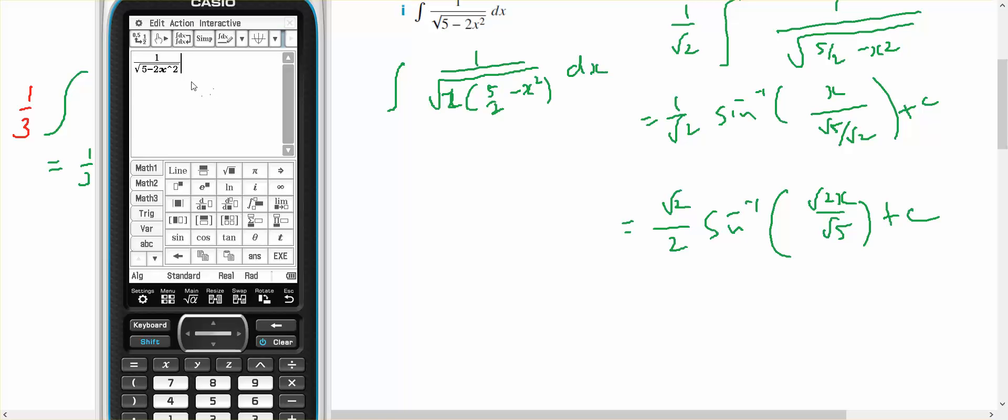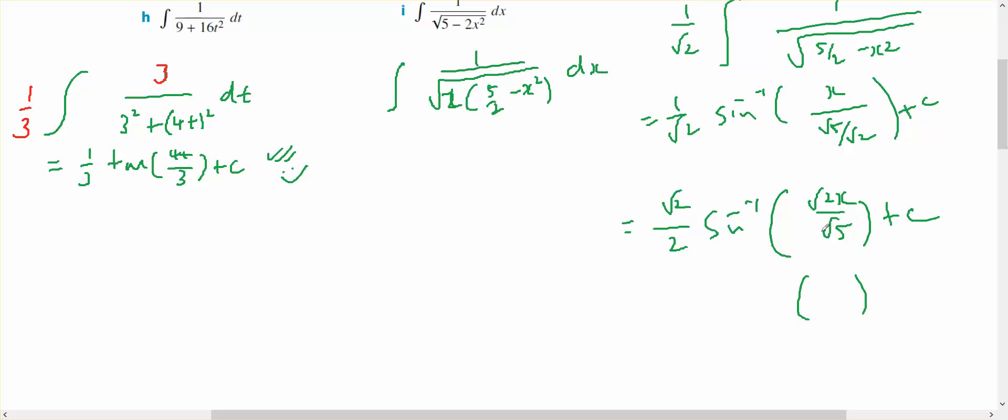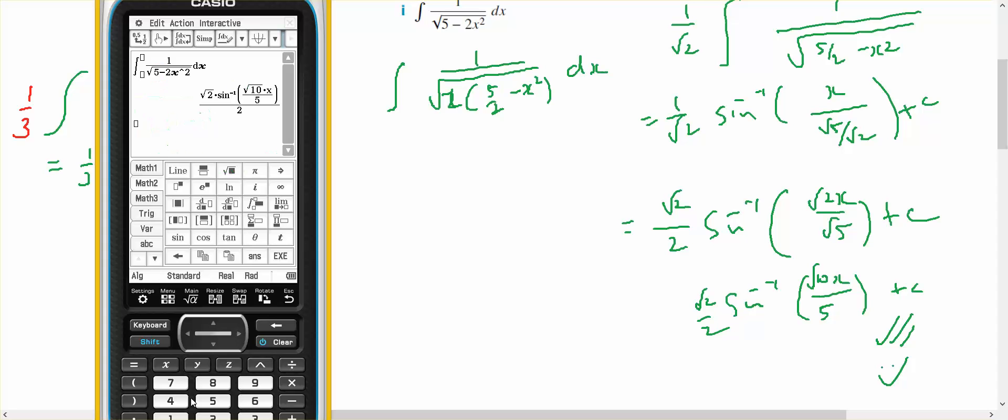Let's just double check and see if that's correct. I've entered into the calculator here math 2 integral with respect to x. There's my root 2 on 2 inverse sign. They've rationalised the denominator there, so that would become the same as 5 on the bottom, multiplied top, so root 10x inverse sign root 2 on 2 plus some constant c. And that's the same.